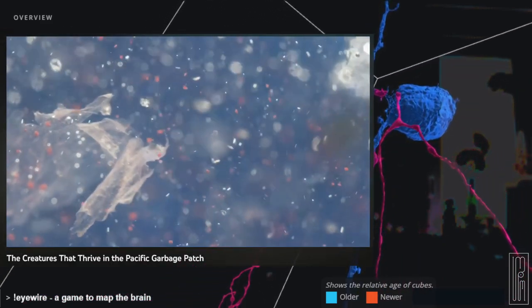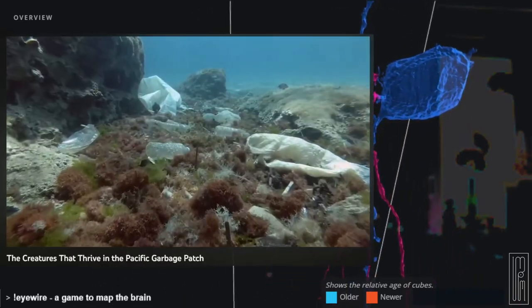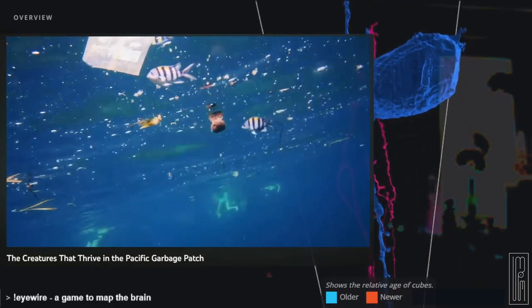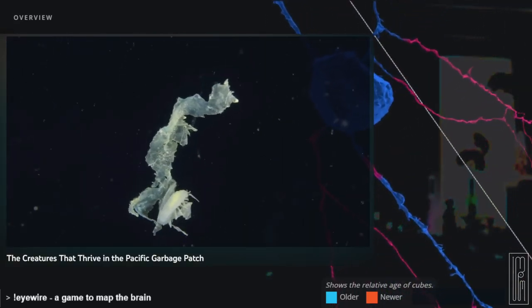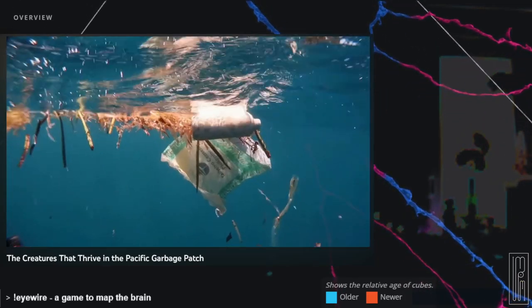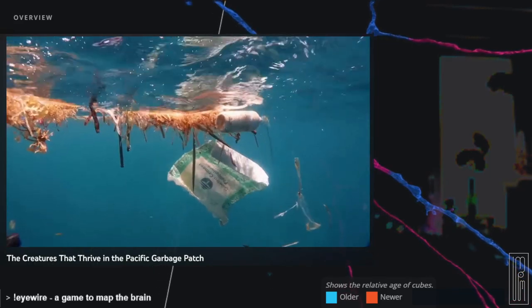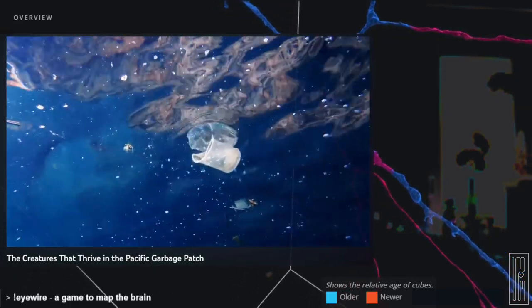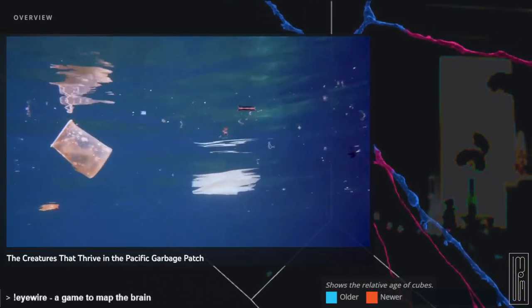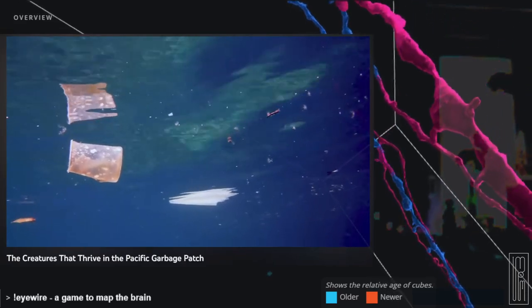Scientists believe much of it gets degraded into microplastics, which get mixed into the seafloor or make their way into the bodies of ocean organisms. Other trash sinks to the deepest parts of the sea. Scientists know that the largest concentrations of garbage are found in gyres. But even these concentrations are nothing like what most people picture. The gyres cover a huge area, and the trash is very dispersed, says Dr. Helm.